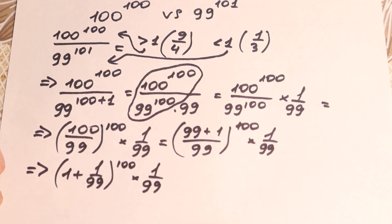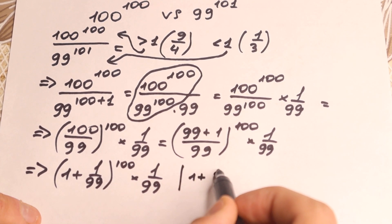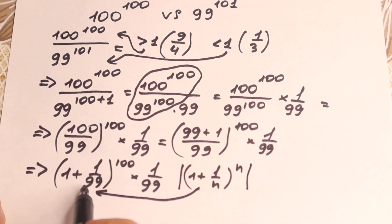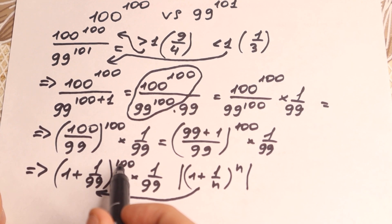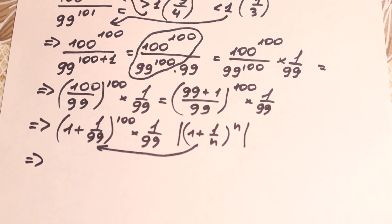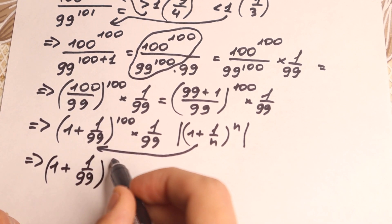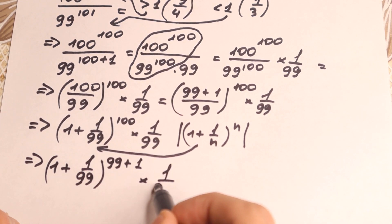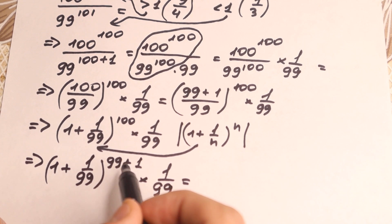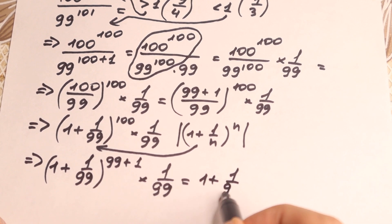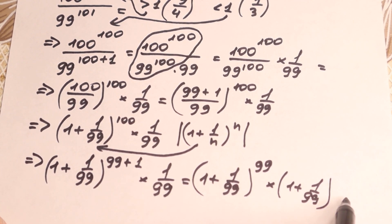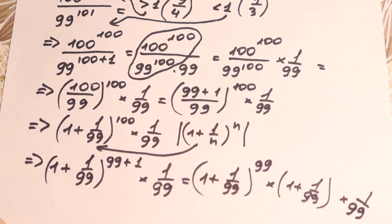I hope you understand this step. What we're going to do next is try to create the expression 1 plus 1 over n to the power n. We need the same denominator and the same power. We have power 100, but we need power 99 — so let's write 100 as 99 plus 1. We'll have 1 plus 1 over 99, to the power 99 plus 1, times 1 over 99. Now let's separate this power: since we have addition in the exponent, we write it as a multiplication: 1 plus 1 over 99 to the power 99, times 1 plus 1 over 99 to the first power, times 1 over 99.